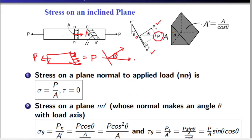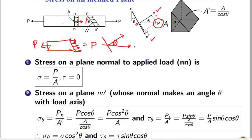We resolve force P into two components. Let θ be the angle made by the normal to the cross-section area with respect to the load axis (the horizontal axis). One component is perpendicular to the cross-section area, called PN, and one is parallel to it, called PS. From the geometry: PN = P·cosθ (the normal component) and PS = P·sinθ (the parallel component).